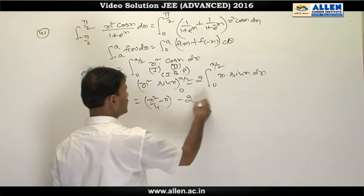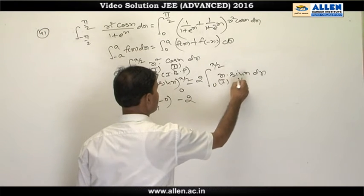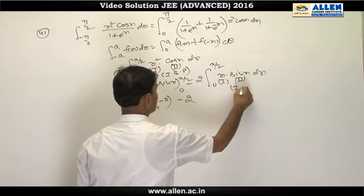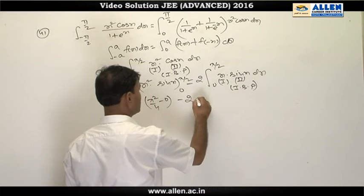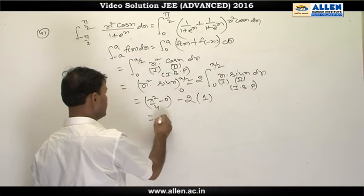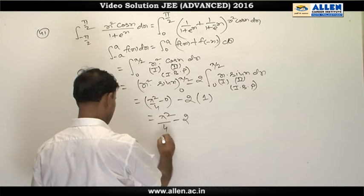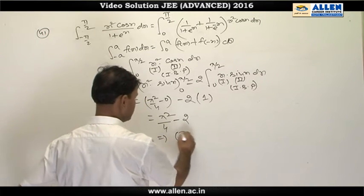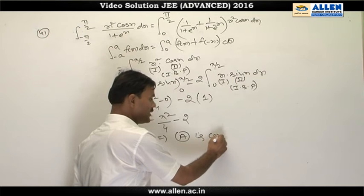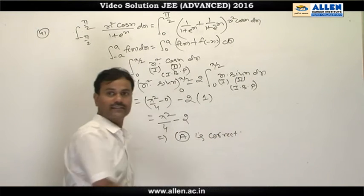Minus 2, and again we can apply integration by parts one more time over this integral. This will give value 1, and therefore the final answer will be π²/4 minus 2, which is option A. Option A is the correct answer.